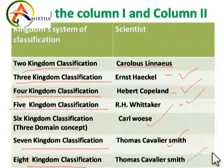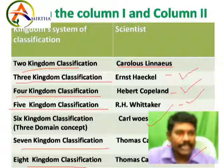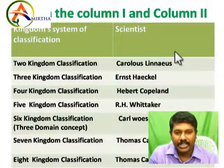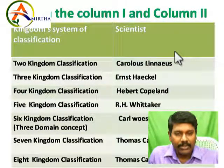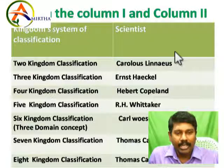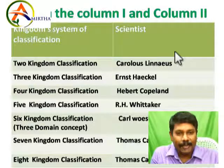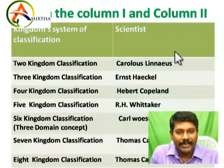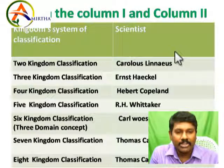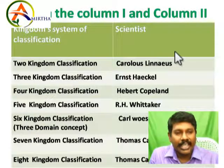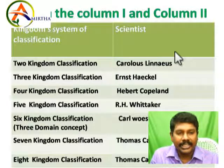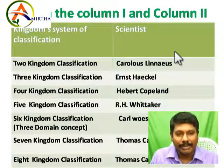So those are the two proposals by Cavalier-Smith. Now you have from two kingdoms up to eight kingdoms. Scientific advancement and individual researchers studying organisms find differences and propose new classification concepts. Each new kingdom represents a different concept. Guys, I hope the video was very interesting. In our next video, we will see the concept further. Thank you.